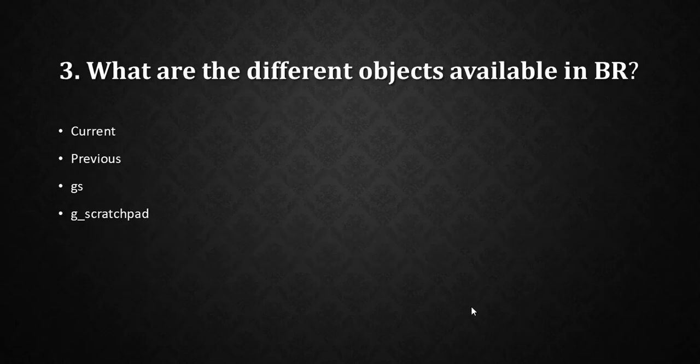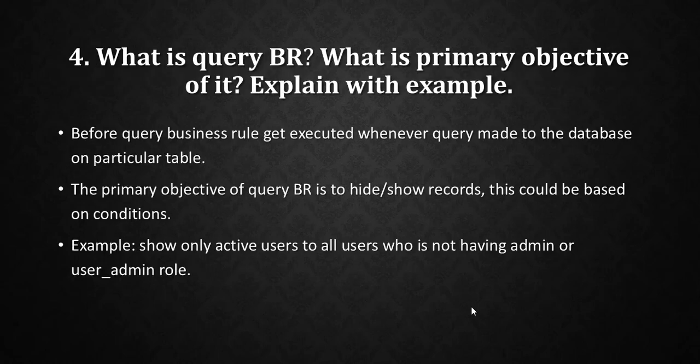The next question is: what are the different objects available in a business rule? The different objects are: current, previous, gs, and g_scratchpad.